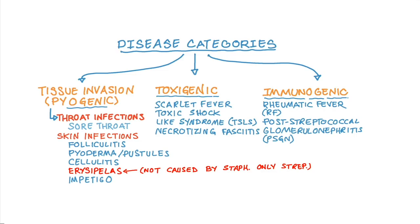The other disease is post-streptococcal glomerulonephritis, in which antigens from the pathogen and antibodies from our body combine together to form complexes. These antibody-antigen complexes sit down on the glomerular surfaces and cause a local immune reaction there, causing damage to the kidney or the glomeruli. Both rheumatic fever and glomerulonephritis are immune-mediated diseases occurring after streptococcal infections.